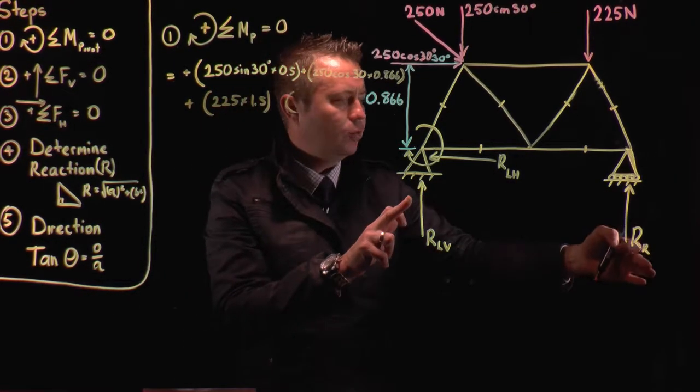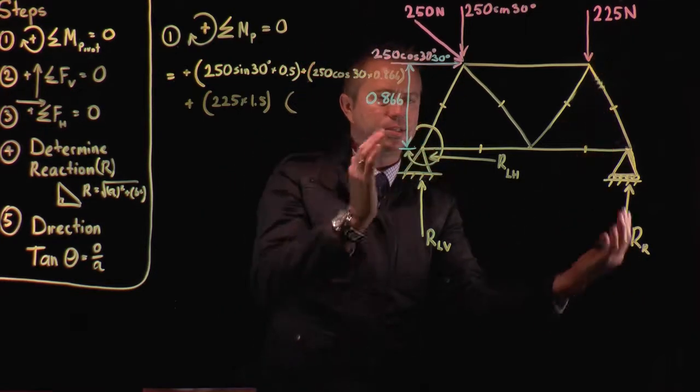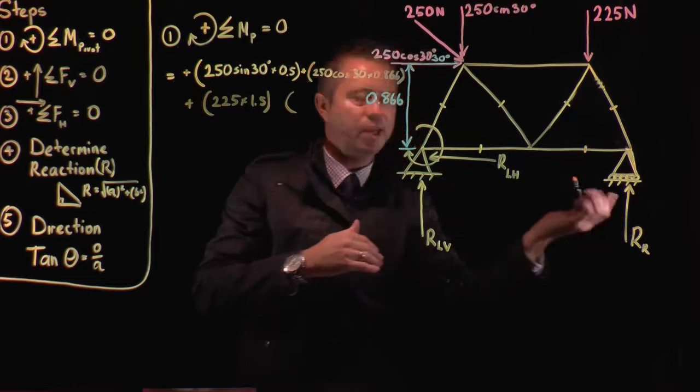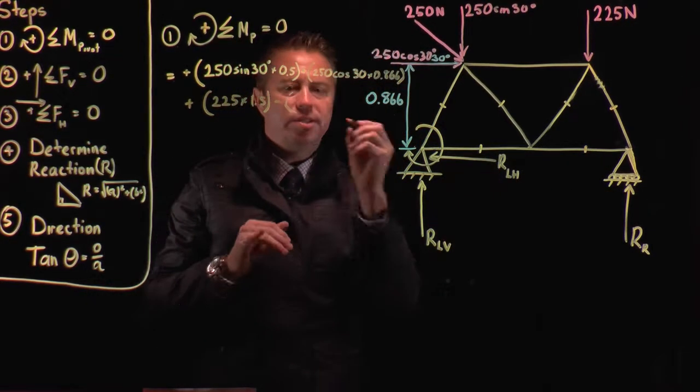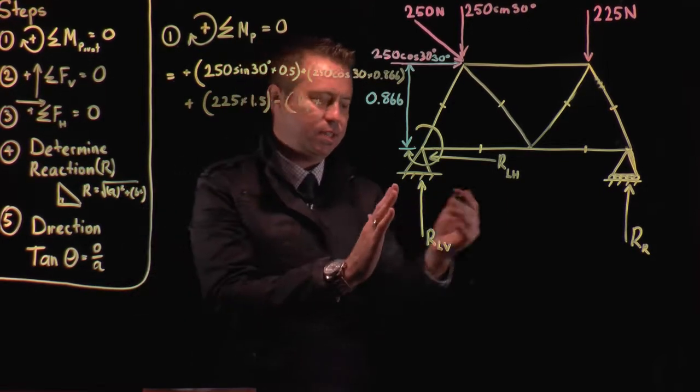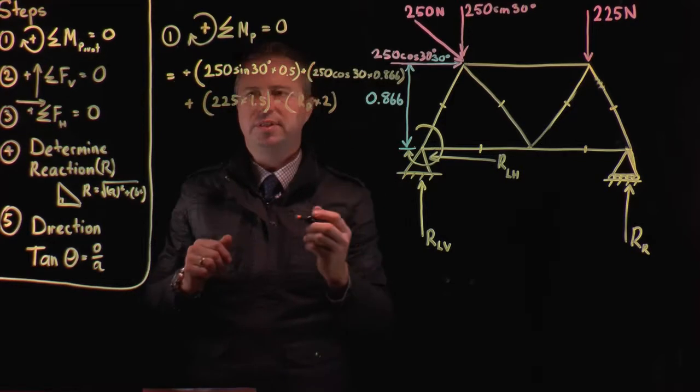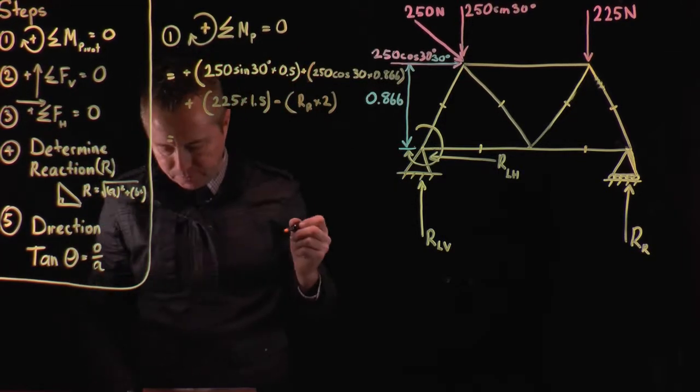The last one is, we've got reaction R. Now reaction R, remember how datum's going up, is going against. You can see there, it's going against. So therefore, it's going to be negative. And we say our force is reaction R, and its distance is 2. Now, we just have to put all this together.